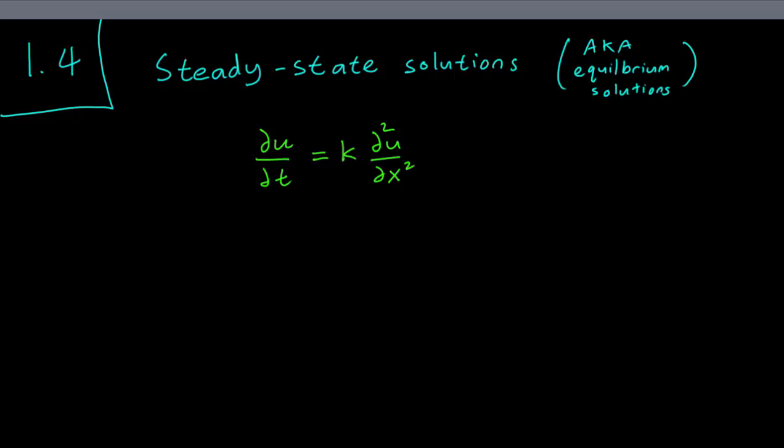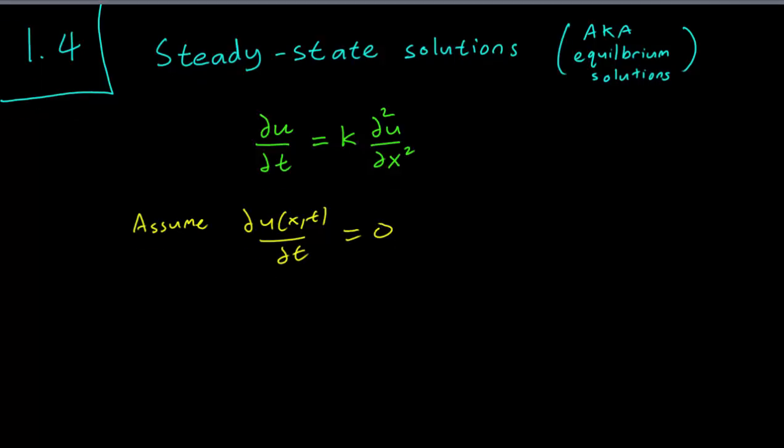So when we say that an equation is steady state or when we say that it doesn't vary with time, what we mean of course is that we make the assumption that ∂u/∂t equals zero for all t and all x. When this condition is met, we say that u is steady state or equilibrium.